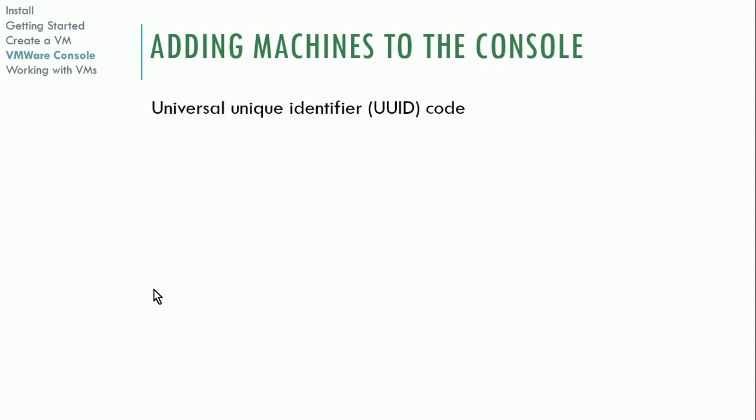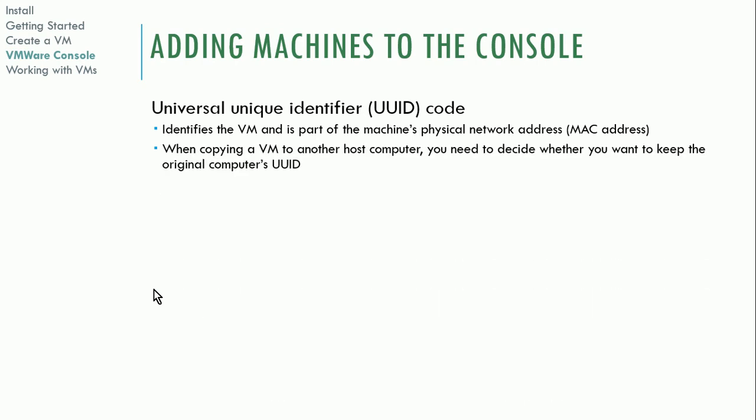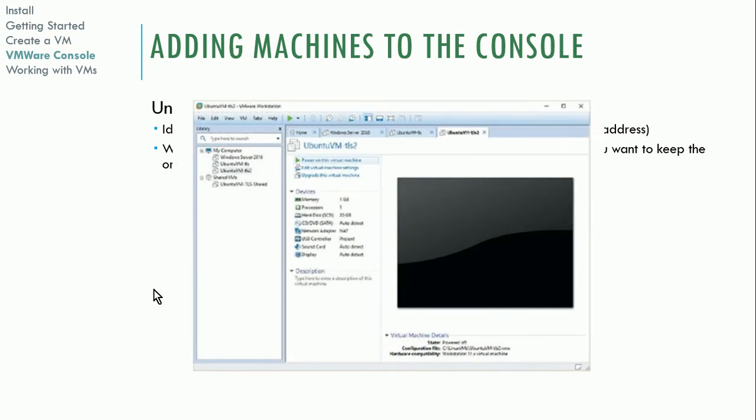One important thing with VMware is the UUID — the universal unique identifier — assigned to each virtual machine. When you copy a VM from one machine to another, you have to indicate whether you want to assign it a new UUID or use the existing one. VMware will ask whether you are copying or moving the virtual machine, because this also affects the MAC address. As discussed with VirtualBox, you can't have two VMs on the same network with the same MAC address.